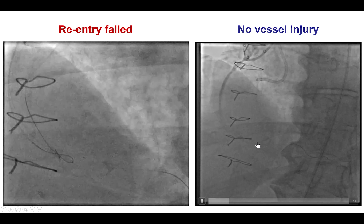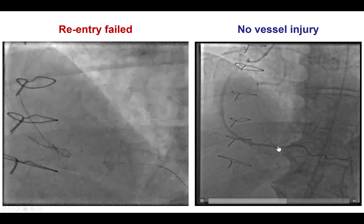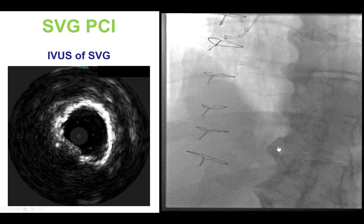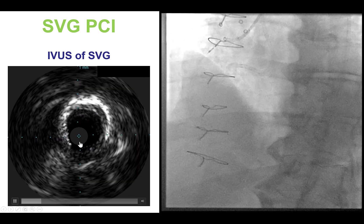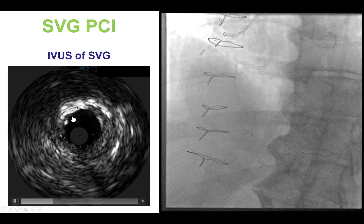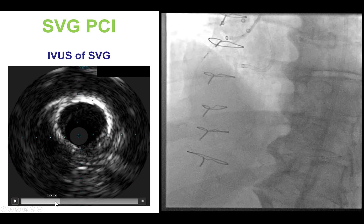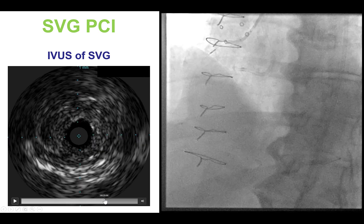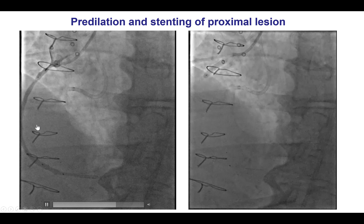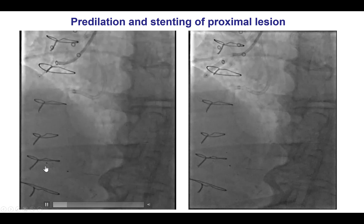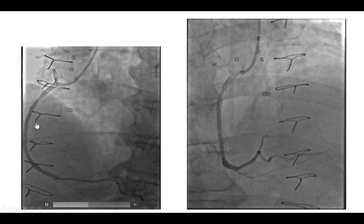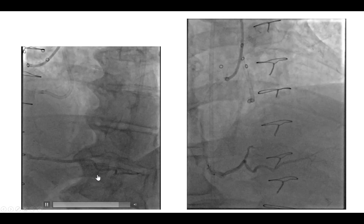Fortunately, there was no injury to the saphenous vein graft or the distal right coronary artery. After this, and given all the challenges, it was decided to stent the vein graft to the right coronary artery. Intravascular ultrasound showed some calcification as well as soft plaque in the proximal segment. A filter wire was placed, followed by stenting, which provided a nice result with TIMI flow into the right coronary artery.